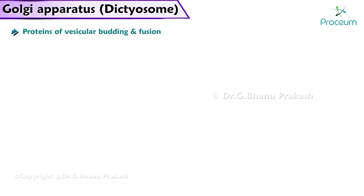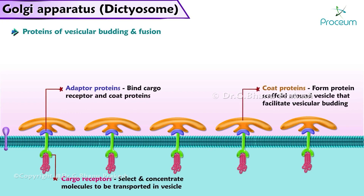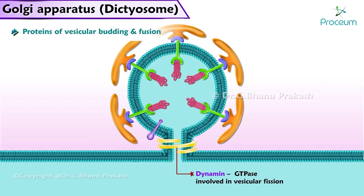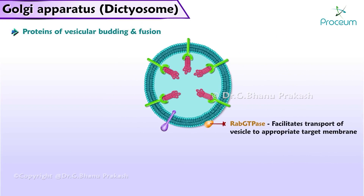The proteins involved in vesicular budding and fusion are: cargo receptors, which select and concentrate molecules to be transported in the vesicle; adapter proteins, which bind cargo receptors and coat proteins; coat proteins, which form protein scaffolds around the vesicle that facilitate vesicular budding; dynamin, which is a GTPase involved in vesicular fission; and RAB-GTPase, which associates with the vesicle after the coat has dissociated and facilitates the transport of the vesicle to appropriate target membranes. It also locks the vesicle to target membranes by attaching tethering proteins.